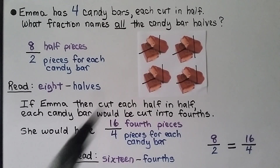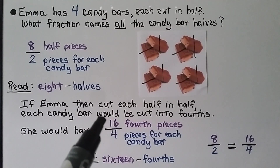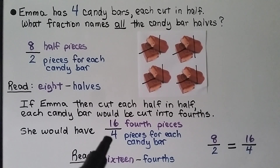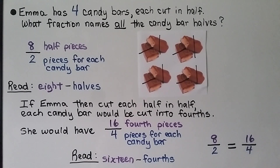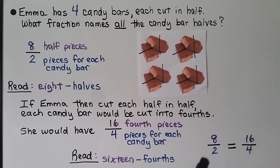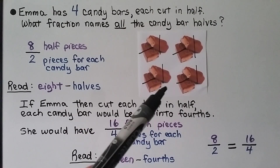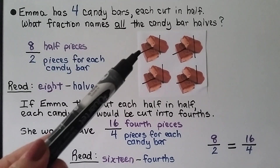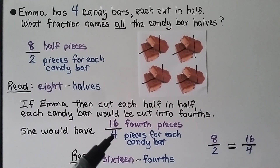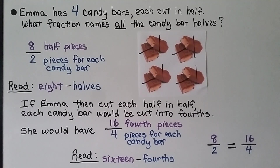We can look at it as 4 times 4 is 16. We would read this as 16 fourths. And eight halves is equal to 16 fourths. She still has a total of four candy bars — they just went from being cut into two pieces to being cut into four pieces. We have the same amount of candy bar, just in smaller pieces now: 16 fourths.